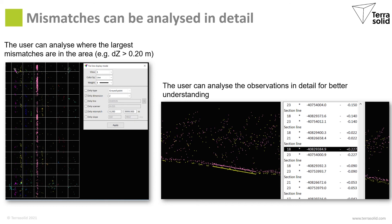For example you can choose to display only the largest mismatches, which you can see to the left. You can also go to the detailed view to look at each observation individually, to see if it looks like a good observation or a bad observation, and to see what kind of mismatches you have in the dataset.